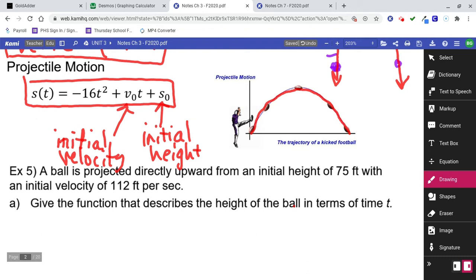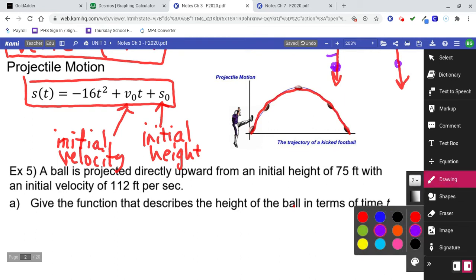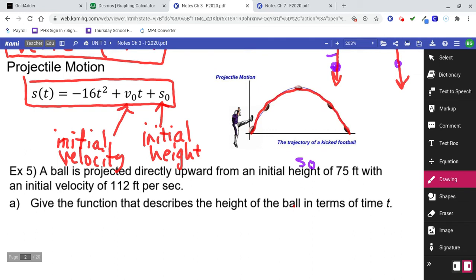Number 5 says a ball is projected directly upward from an initial height of 75 feet with an initial velocity of 112 feet per second. Part A, give the function that describes the height of the ball in terms of time. So all we have to do is plug in those numbers. You've got the initial height, that was S0 right here. And the initial velocity was V0 right here. So plug those numbers in. You would have S of t equals negative 16t squared plus velocity was 112t plus initial height was 75. Give the function. There it is.